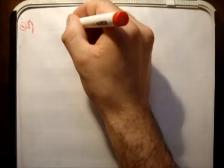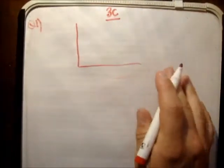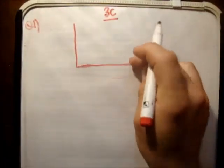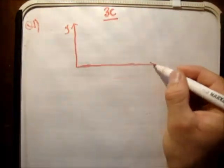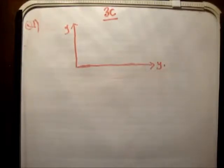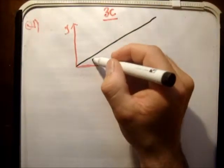So the first thing we need to do of course is to sketch the motion itself. So I'm going to draw my y axis and my x axis making my xy plane, and I'm going to draw in black the incline. And we know the incline is at an angle beta to the horizontal.